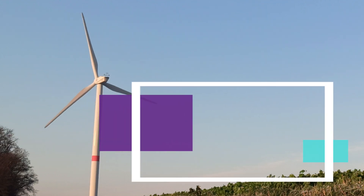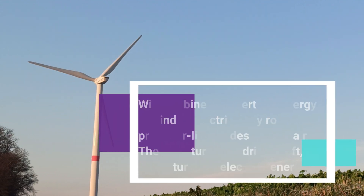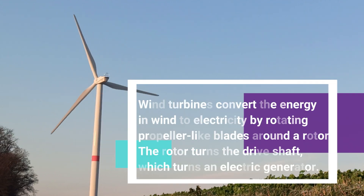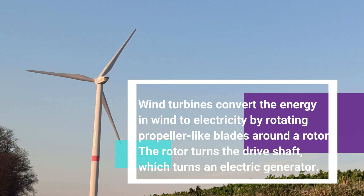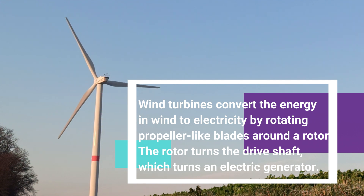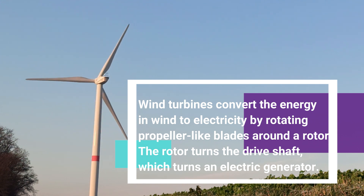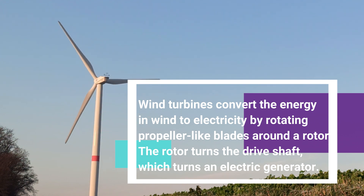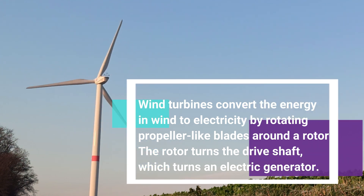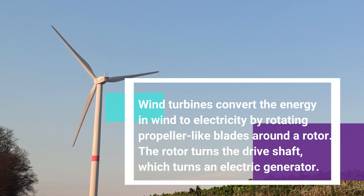Wind turbines convert the energy in wind to electricity by rotating propeller-like blades around a rotor. The rotor turns the drive shaft, which turns an electric generator.